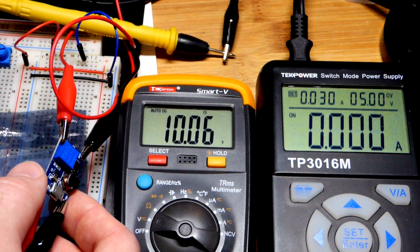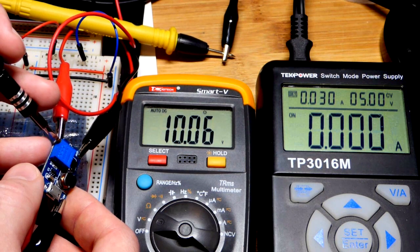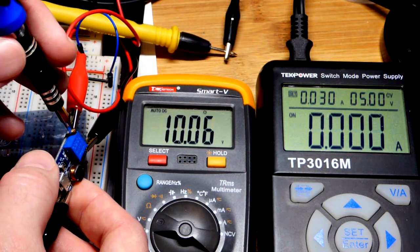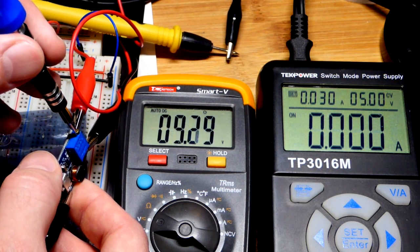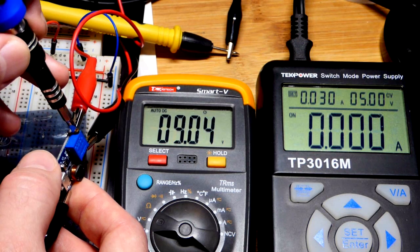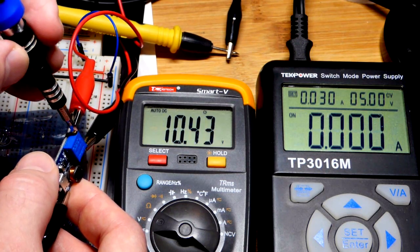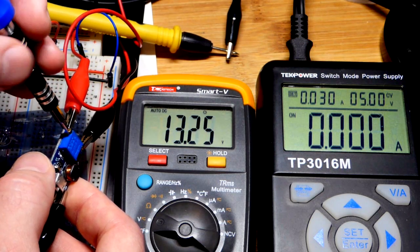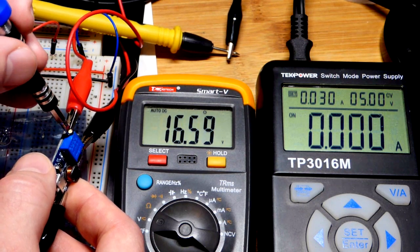There is the trimmer potentiometer. I have a little screwdriver. Looking this way, I think counterclockwise lowers the voltage and clockwise raises the voltage. You can just fine-tune it until you get the voltage you want. We can go up to 15 volts.